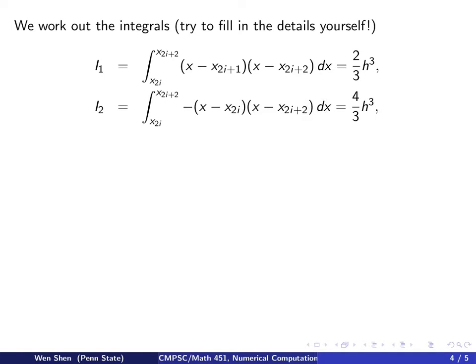And the second one, the one on the midpoint, you remember that it carries a negative sign in the front, so we'll take the negative sign with us, and you integrate that, and what you get is exactly 4 over 3h cubed. And then the last integral is x minus 2i times x minus 2i plus 1, integrating from x2i to x2i plus 2, and you work it out, and you get 2 over 3h cubed.